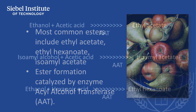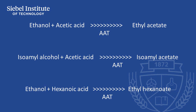For example, ethanol and acetic acid form ethyl acetate; isoamyl alcohol and acetic acid form isoamyl acetate; and ethanol and hexanoic acid form ethyl hexanoate.